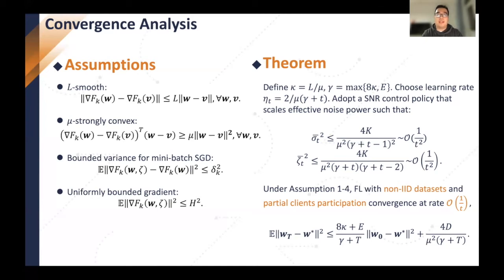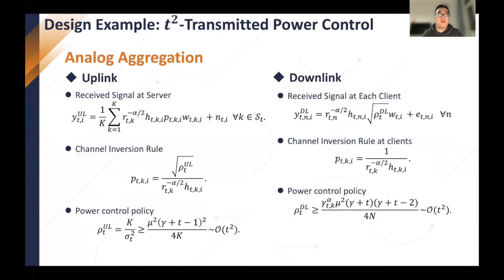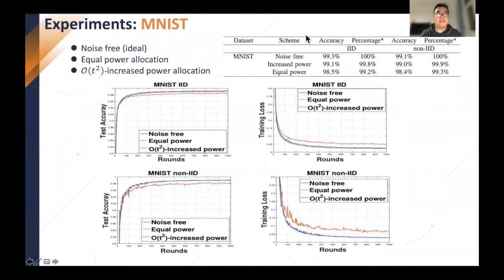Instead, we need to allocate transmitted power at a rate of T². We take analog aggregation as an example. The original analog aggregation uses a channel inversion rule, which compensates for channel fading so that all local models aggregate automatically at the server. However, the original analog aggregation used equal transmitted power for each communication round. Inspired by the results of the previous theorem, we improve analog aggregation by allocating transmitted power at a rate of T². Extensive experiment results show the advantage of this increased power allocation scheme.